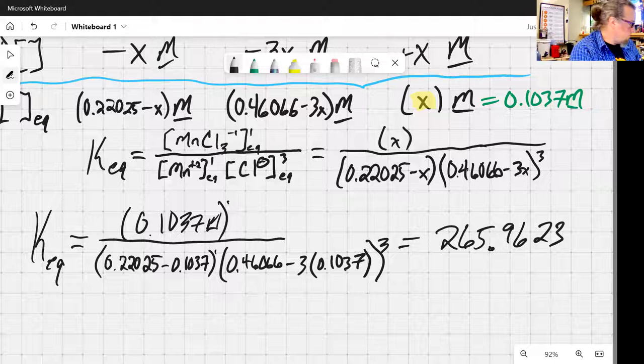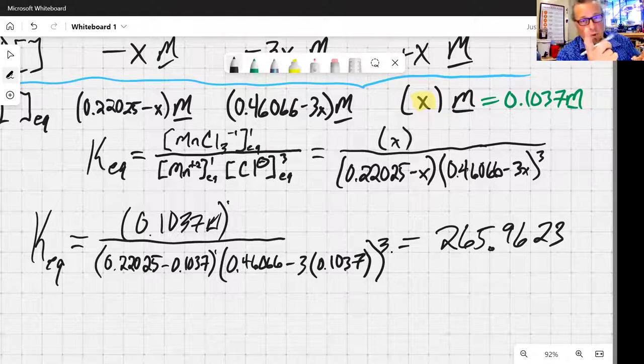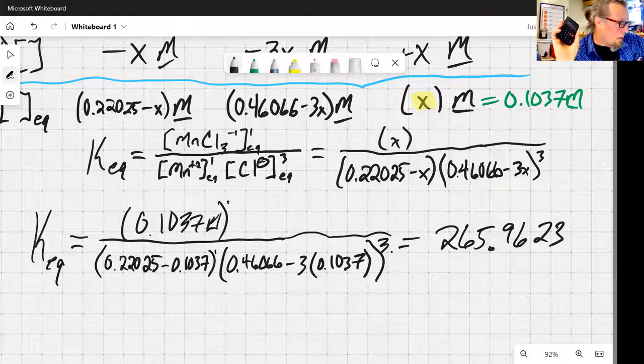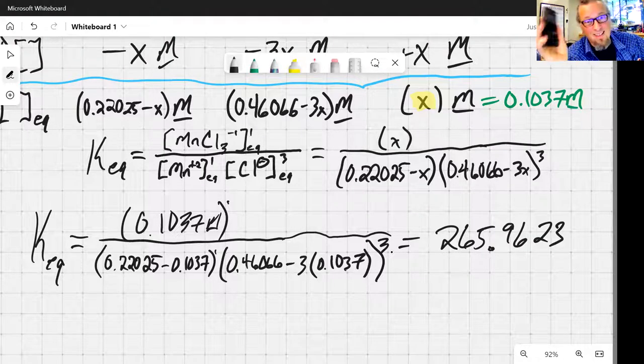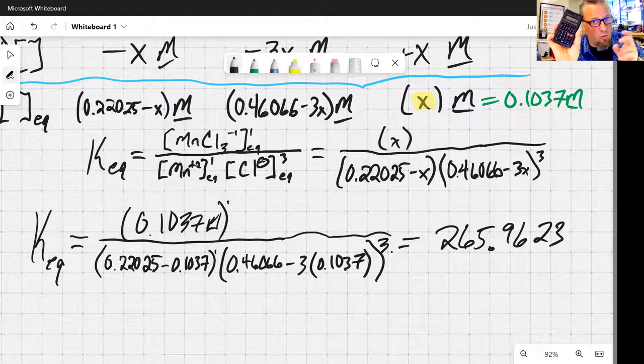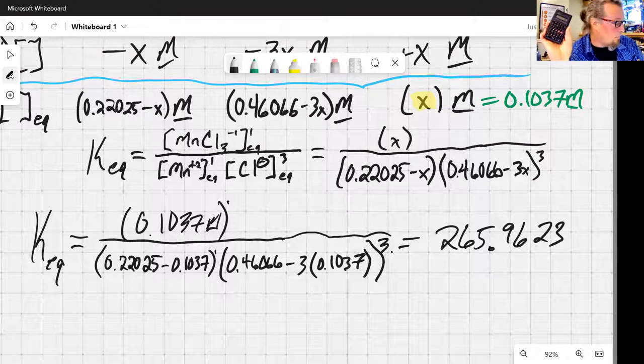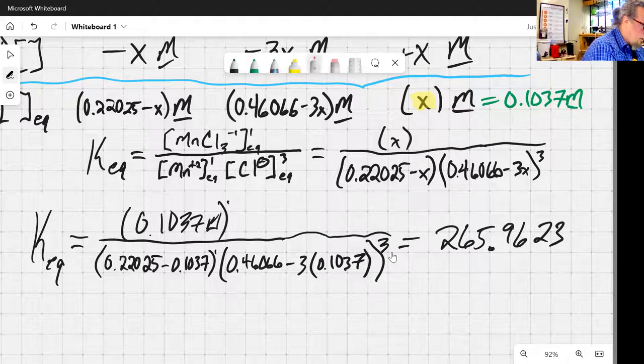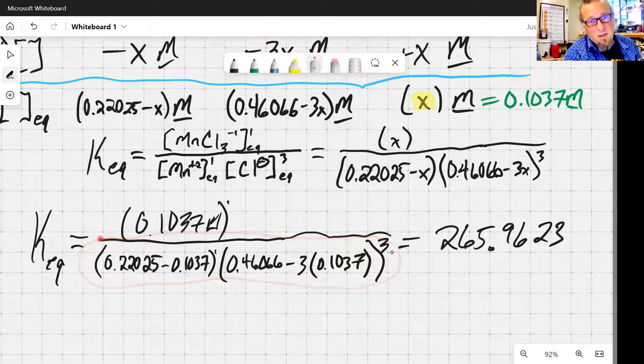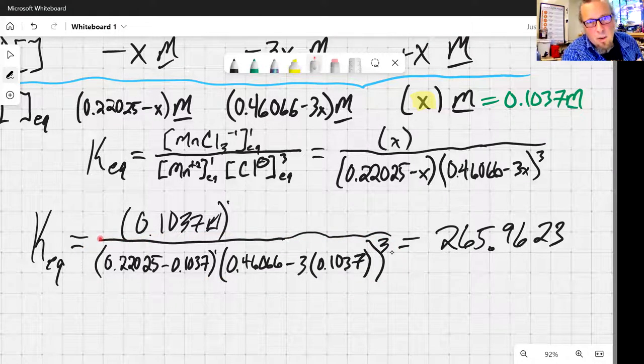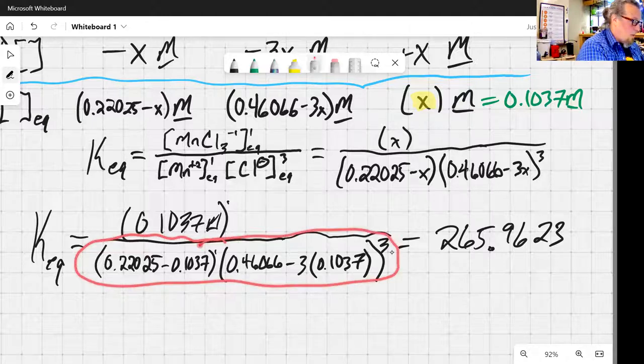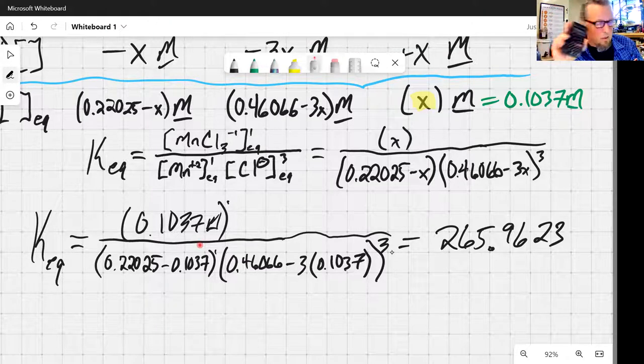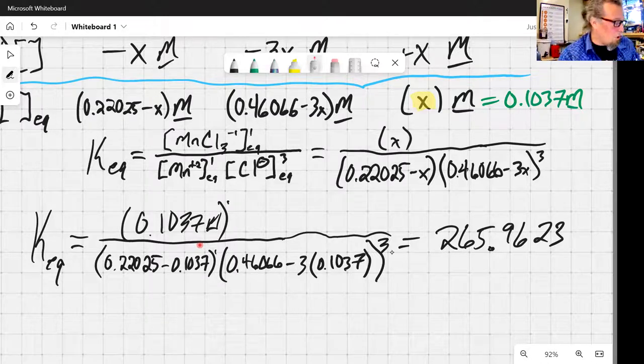And a couple things. First of all, when you're plugging that into your calculator, make use of the parentheses a lot. So most calculators have a parentheses function to group things. Make sure you're grouping things and grouping them correctly. For something like this, I also use my 1 over x button because the denominator here, the bottom, is a fairly complicated expression just because there's a lot of numbers. So I actually evaluate this first, then hit 1 over x. That makes the denominator multiplied by 0.1037. So just some calculator tricks to get you there.